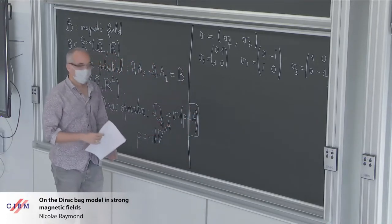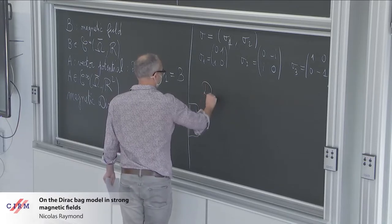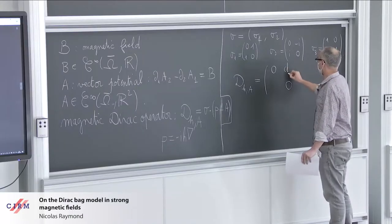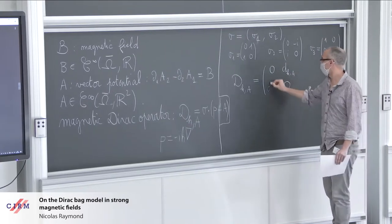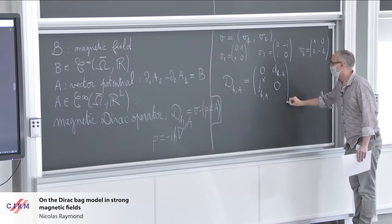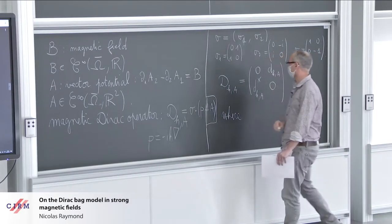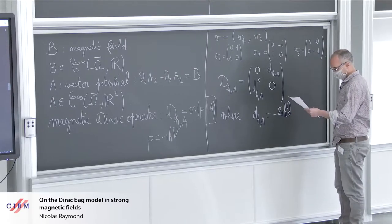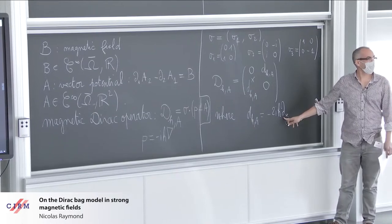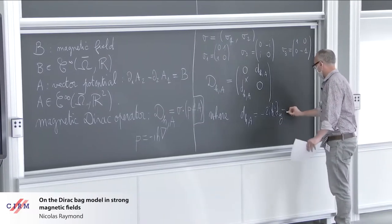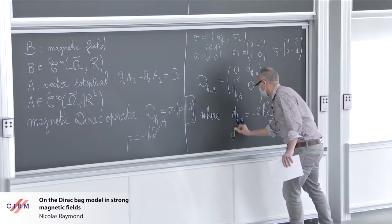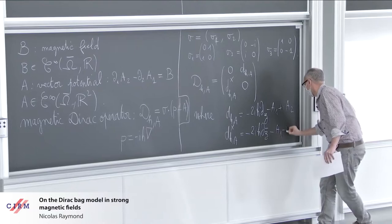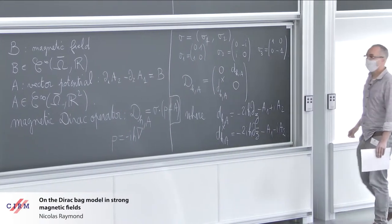Actually, we can describe the action of this operator as follows. D_H,A may be written like this: 0, D_H,A* and D_H,A, 0, where D_H,A is minus 2iH D_Z, D_Z being the usual Cauchy-Riemann derivative, minus A₁ plus iA₂, and the formal adjoint is essentially the same with D_Z bar minus A₁ minus iA₂. This will be the action of the operator.